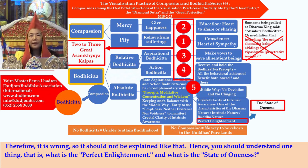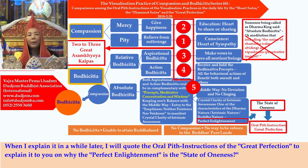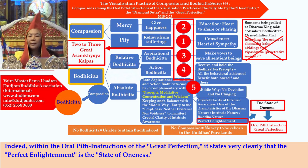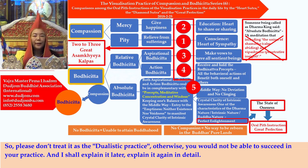You should understand what is perfect enlightenment and what is the state of oneness. I will quote the oral pith instructions of the Great Perfection to explain why perfect enlightenment is the state of oneness. Within the oral pith instructions of the Great Perfection, it states very clearly that perfect enlightenment is the state of oneness. Please don't treat it as a dualistic practice, otherwise you would not be able to succeed. Emptiness, neither existence nor voidness, is the only practice method that can truly rebuild and restore perfect enlightenment.